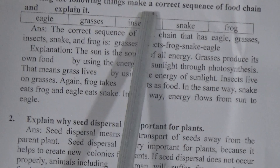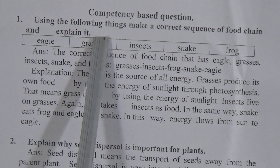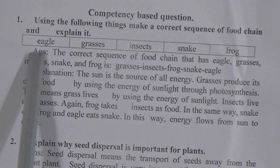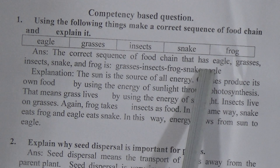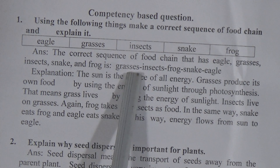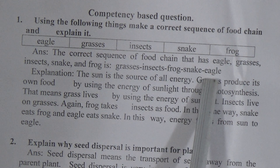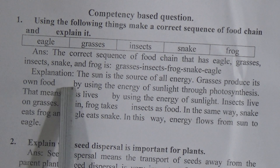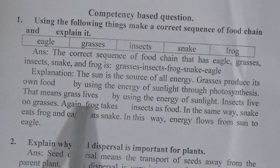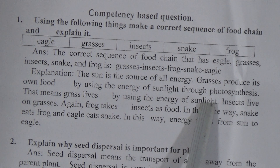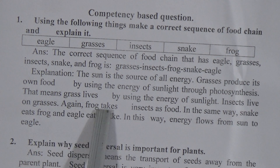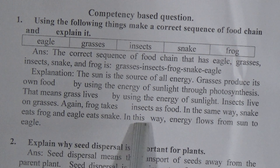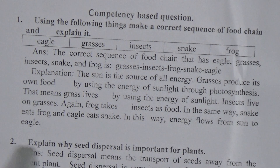The first competency-based question: Using the following things, make a correct sequence of food chain and explain it. The given things are: eagle, grasses, insect, snake, frog. The correct sequence is: grasses → insect → frog → snake → eagle. Explanation: The Sun is the source of all energy. Grasses produce their own food using sunlight through photosynthesis. Insects live on grasses, frogs take insects as food, snakes eat frogs, and eagles eat snakes. In this way, energy flows from the Sun to the eagle.